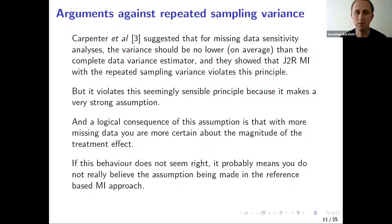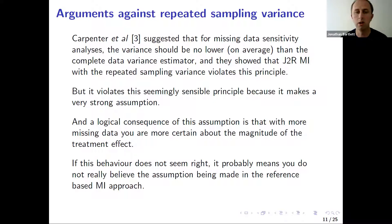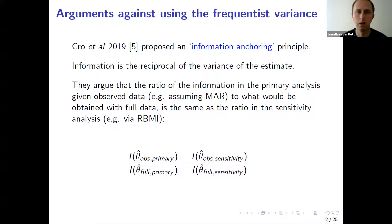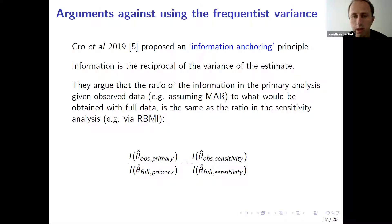My argument in response is that it violates this seemingly sensible principle because the reference-based methods make very strong assumptions about the missing data in the active treatment group. A logical consequence of those assumptions is that with more missing data, you are paradoxically more certain about the magnitude of the treatment effect than you would have been with less missing data. If that behaviour doesn't seem right, it probably means you don't really believe the assumption being made. A little more recently, Cro et al. in 2019 proposed an information anchoring principle. Information is the reciprocal of the variance of an estimate, and Cro et al. argued that the ratio of the information in the primary analysis given the observed data to what that information would be with full data should be the same in a sensitivity analysis.